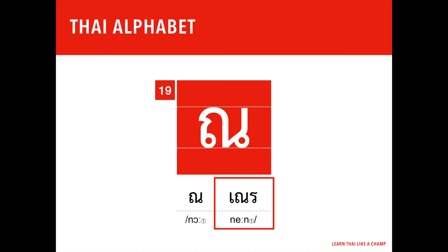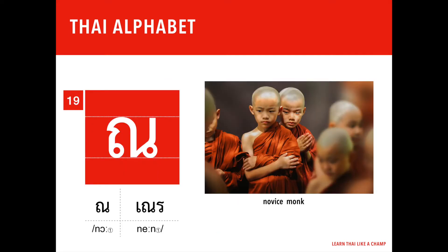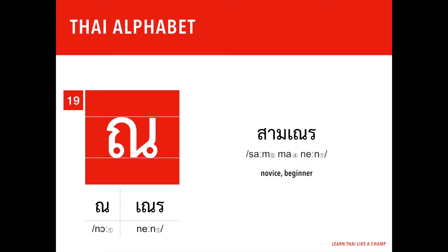Nên is the second part, which is the vocabulary associated with the letter. The word Nên means novice monk, which is a Buddhist monk under the age of 20 years old. The word Nên is a shortened form of the word Sáma Nên, which derived from Pali means beginner or novice.